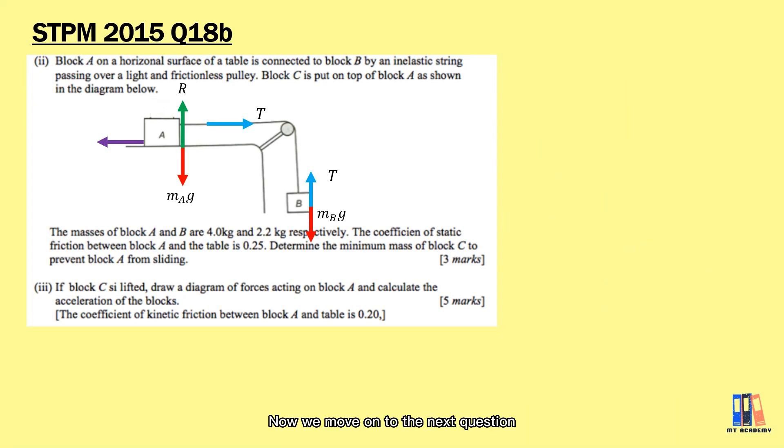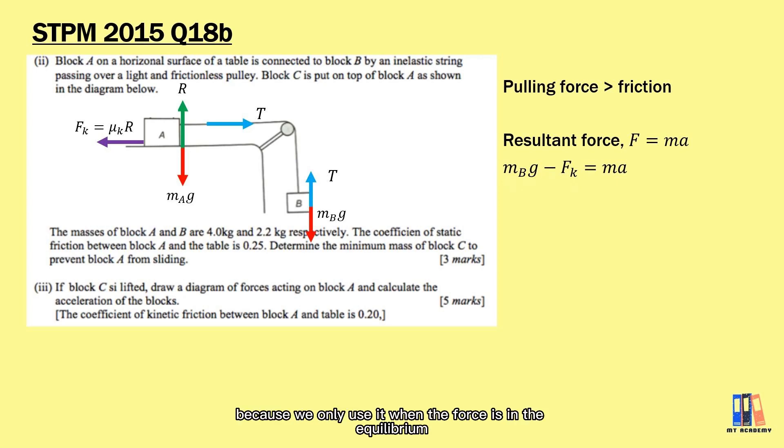Now we move on to the next question. Block C is removed, so we could expect that the forces are now not in equilibrium. The removal of block C reduces the reaction force from the surface, which also affects the friction. Now, the pulling force or the tension in the string is able to pull block A to the right. Hence, we can apply the formula F = ma and also the kinetic friction. Please remember not to use the static friction in this case because we only use it when the force is in equilibrium or when the object is not moving.